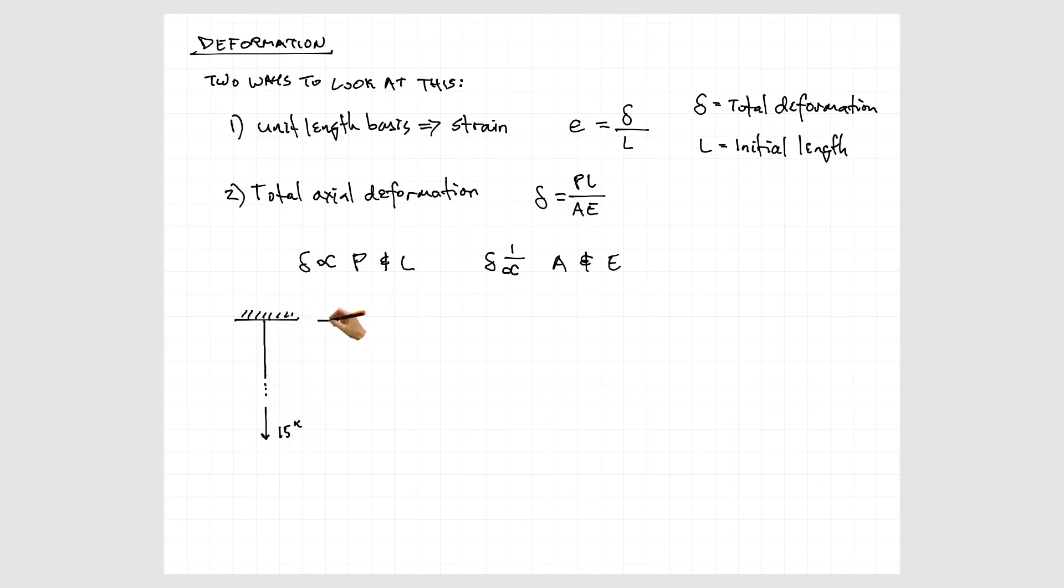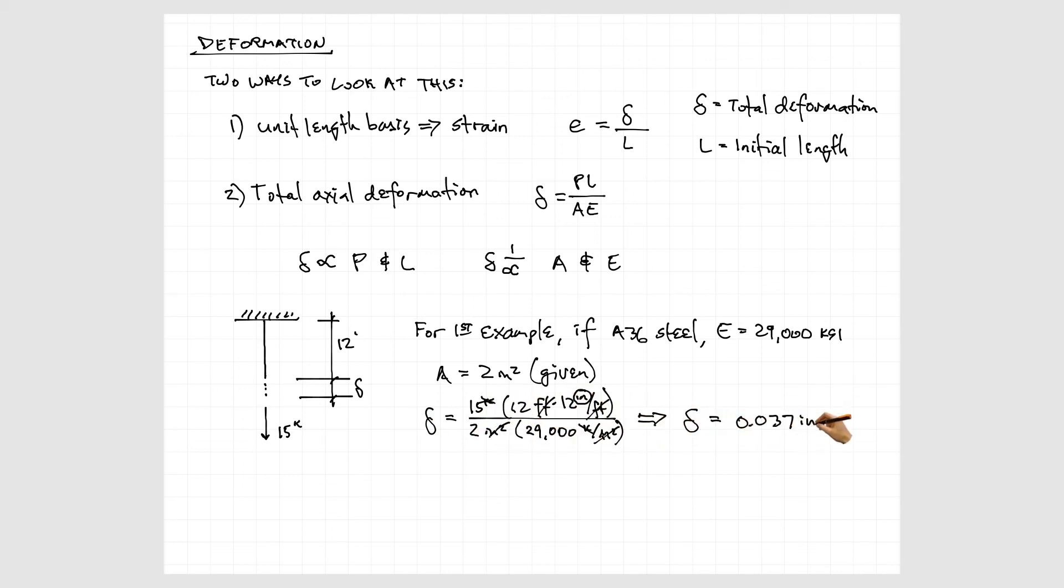If we take our first example of a rod or bar with 15 kips on it, we'll say that it's 12 feet long. And if it's made out of A36 steel, the elastic modulus for A36 steel is 29,000 kips per square inch. We were given a 2-inch square bar for that, and we simply plug that into the equation.